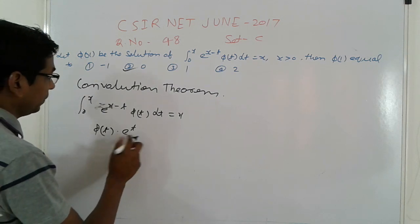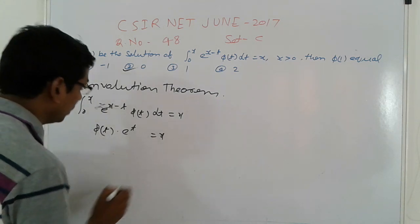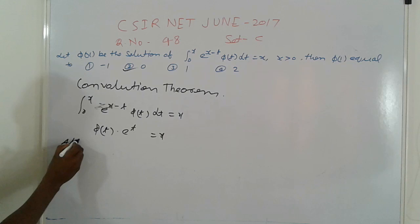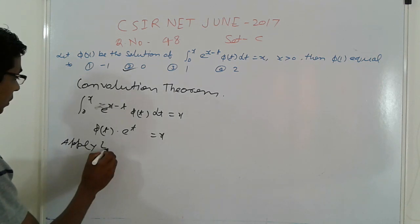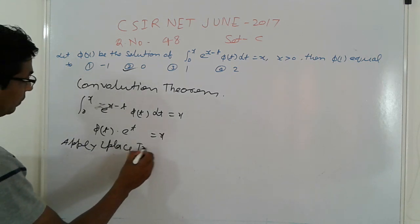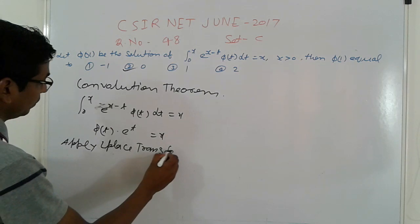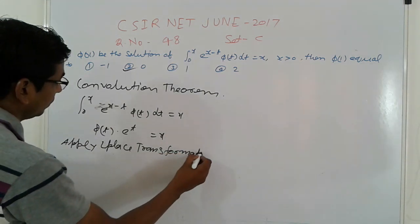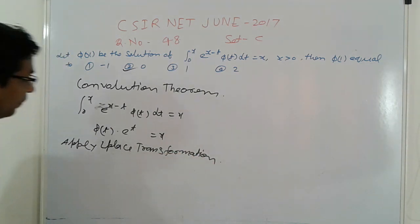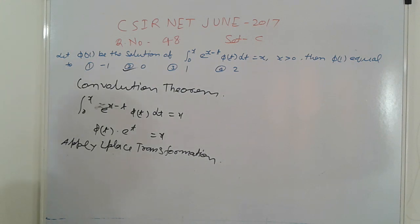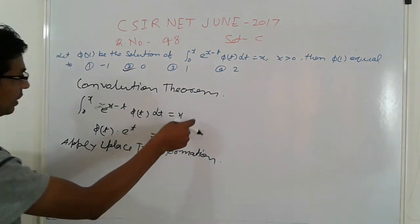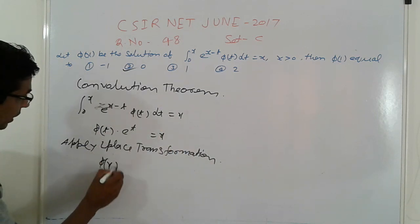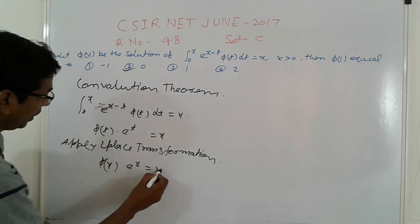Apply the Laplace transformation. You have φ(x), and the right-hand side is x. So you can see this as φ(x)e^x = x. Apply Laplace: L{φ(x)} · L{e^x} = L{x}.